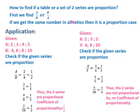How to find if a table or a set of two series are proportion? First, we find a over b or b over a, or any latter use, c over d, l over m, x over y. If we get the same number in all ratios, then it is a proportion case.